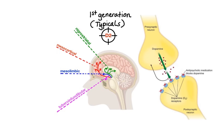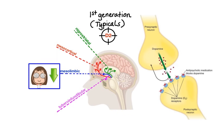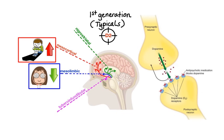Blockade of dopamine receptors in the mesolimbic pathway reduces positive symptoms such as delusions and hallucinations, which is beneficial. However, blockade of dopamine receptors in the mesocortical pathway — which is already underactive in schizophrenia — may cause worsening of negative symptoms, leading to diminished energy, lack of motivation, restrictions in emotional and verbal expressiveness, and social disengagement.